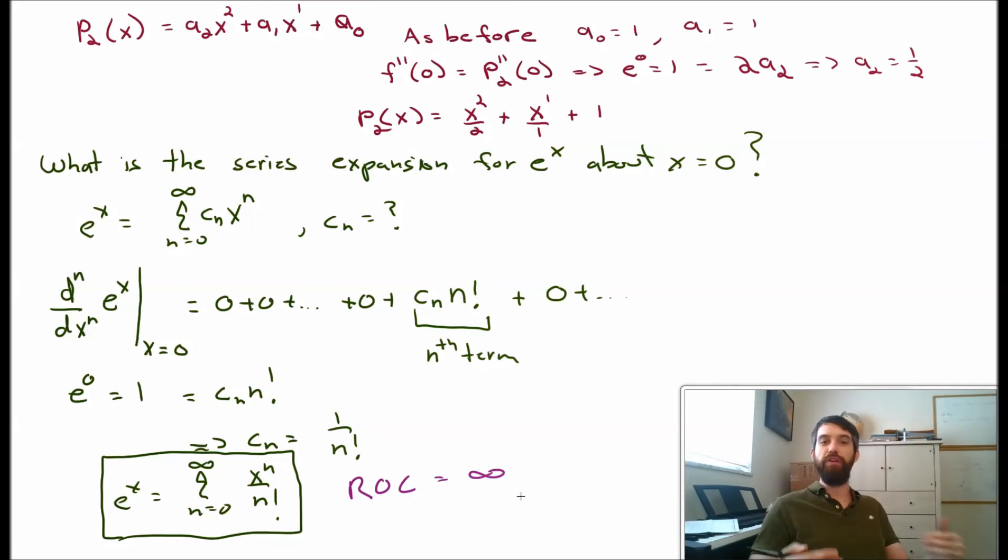This is a series we studied before, we could use the ratio test to remind ourselves, but this converges everywhere. And so this power series, the sum from n equal to 0 to infinity of x^n over n factorial,